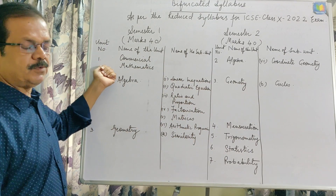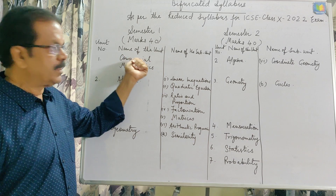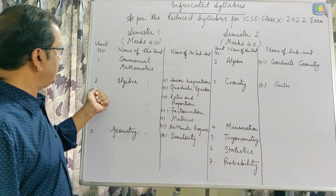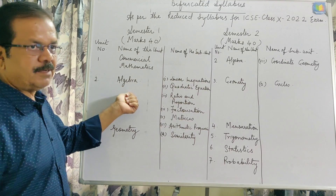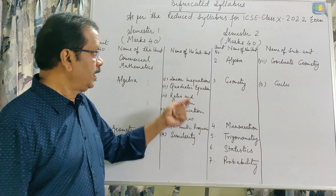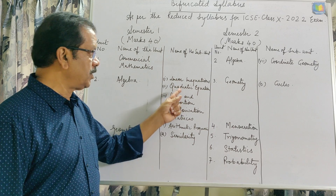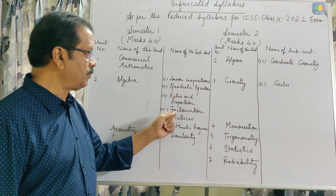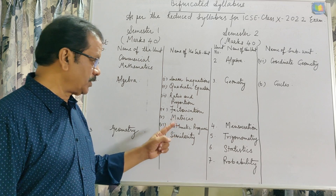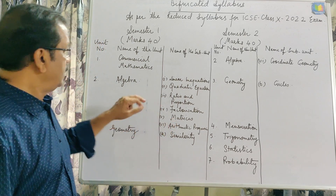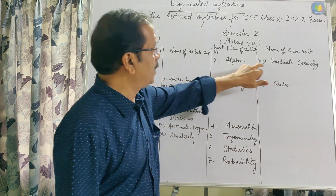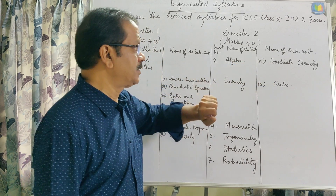The first unit is commercial mathematics and the second unit is algebra. From algebra, in the first semester you will find linear inequations, quadratic equations, ratio and proportion, factorization, matrices, and arithmetic progression.